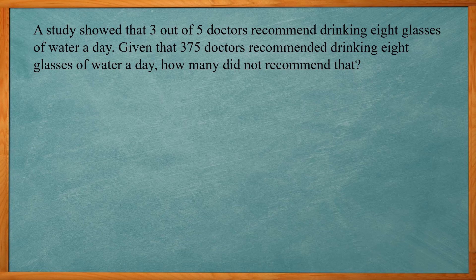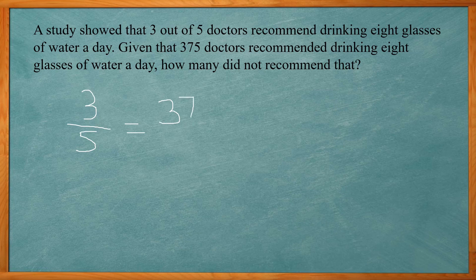So again we need to set up a proportion. So if it's 3 out of 5 that recommended, I'm going to say 3 to 5 and that 3 is going to correlate to 375 doctors over x. X would be the total number of doctors.